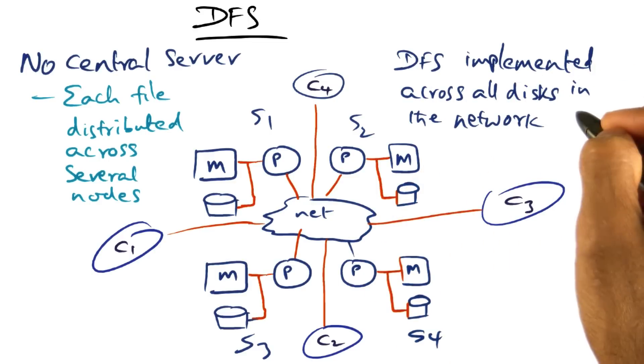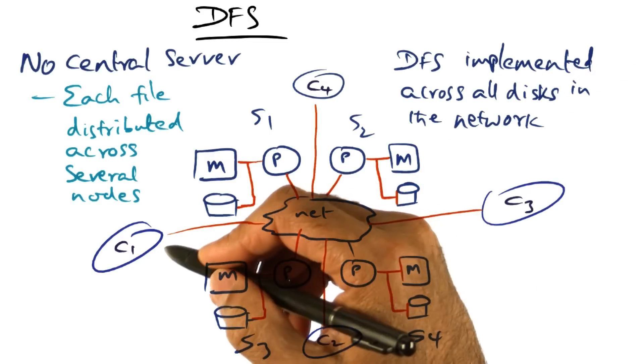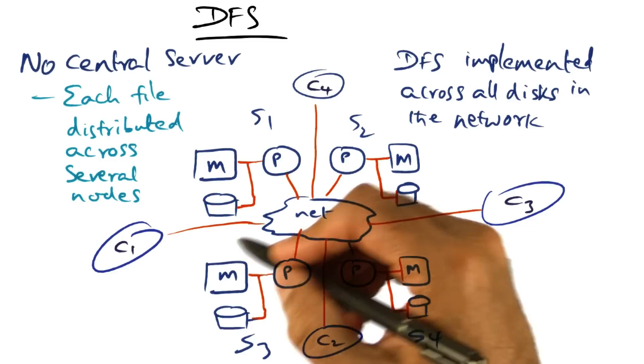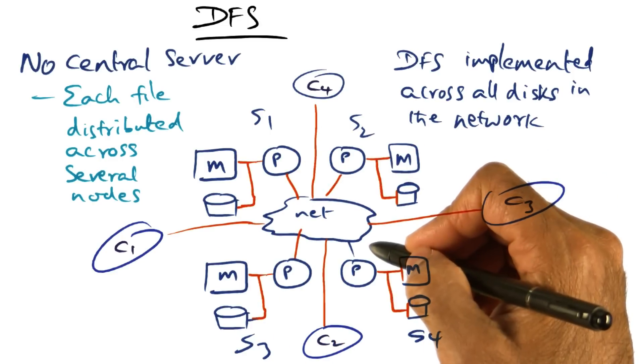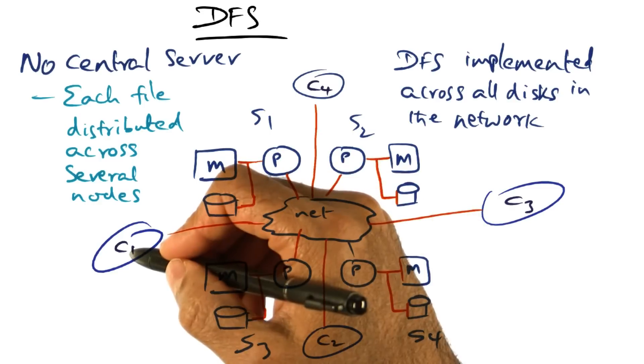Since the DFS is implemented across all disks in the network, if a client wants to read or write a file, it contacts all the servers potentially to get the data it is looking for.